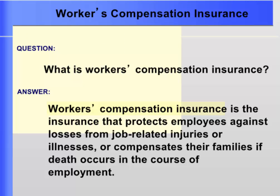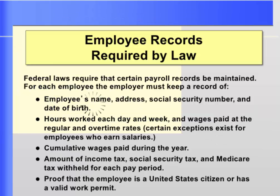In states where it is required, employers pay for insurance that reimburses employees for losses from job-related injuries or compensates their families in the event of death in the course of employment. The employer must keep records of each employee's name, address, social security number, date of birth, hours worked each day and week, wages paid at regular and overtime rates, cumulative wages paid during the year, amounts of income tax, Social Security, and Medicare withheld each pay period, and proof that the employee is a U.S. citizen or has a valid work permit. Failure to keep proper payroll records can result in hefty penalties.